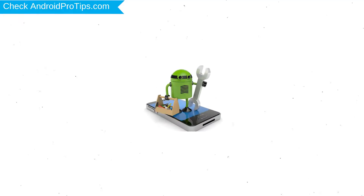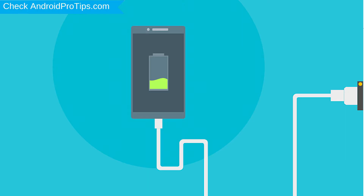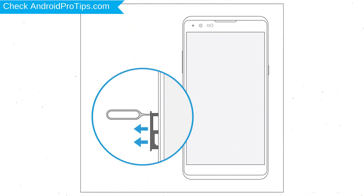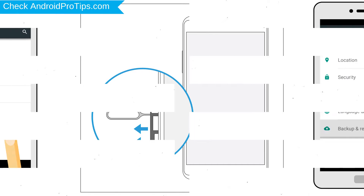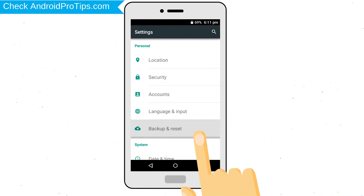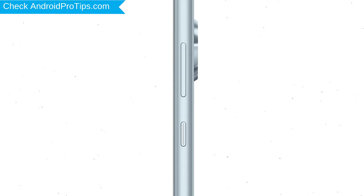Before resetting your mobile, your battery must be above 50%. Remove SD cards and SIMs. Back up your Android mobile data if possible. Power off your mobile by holding the power button.